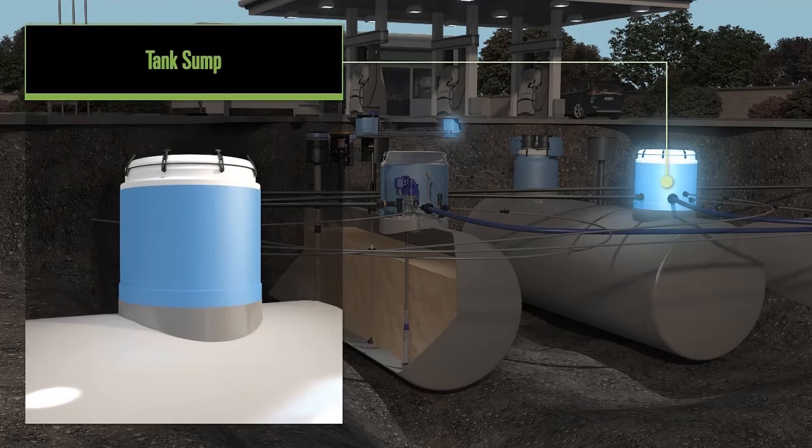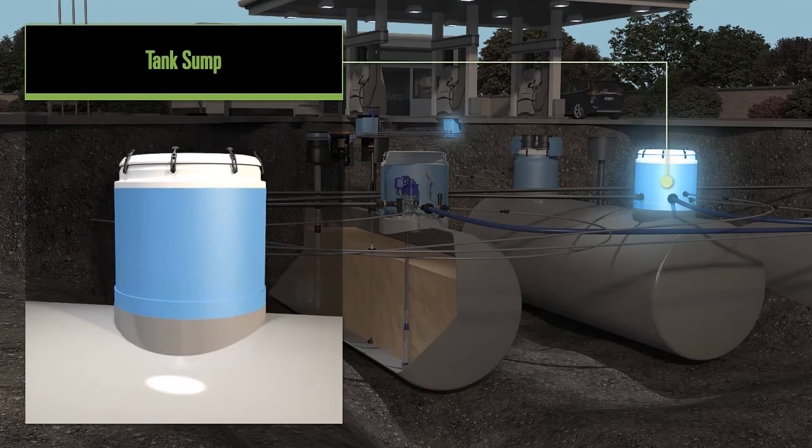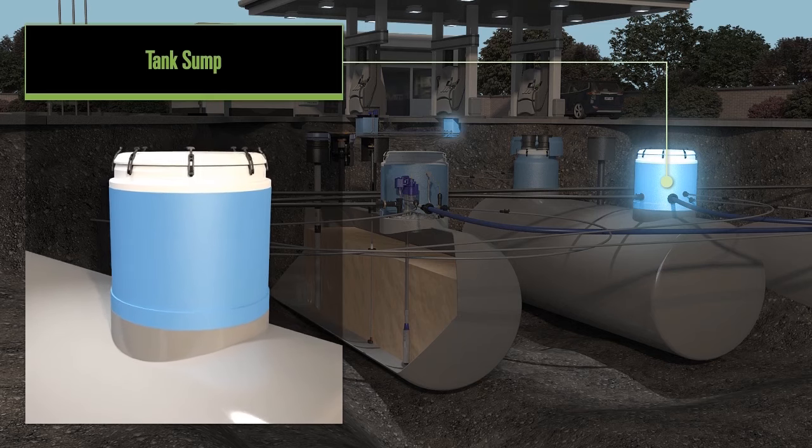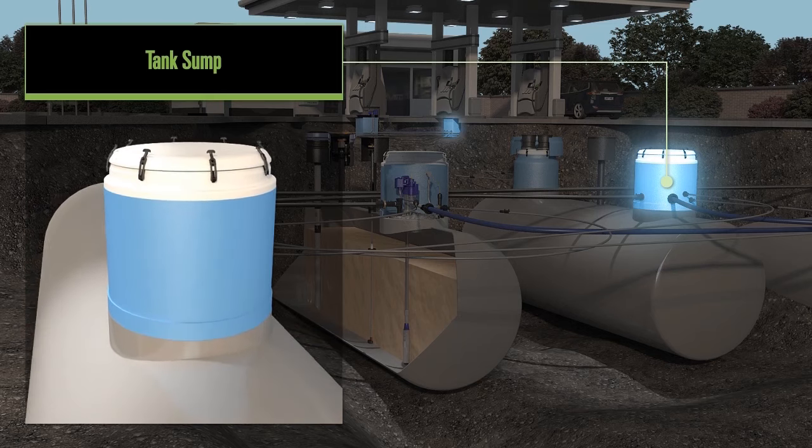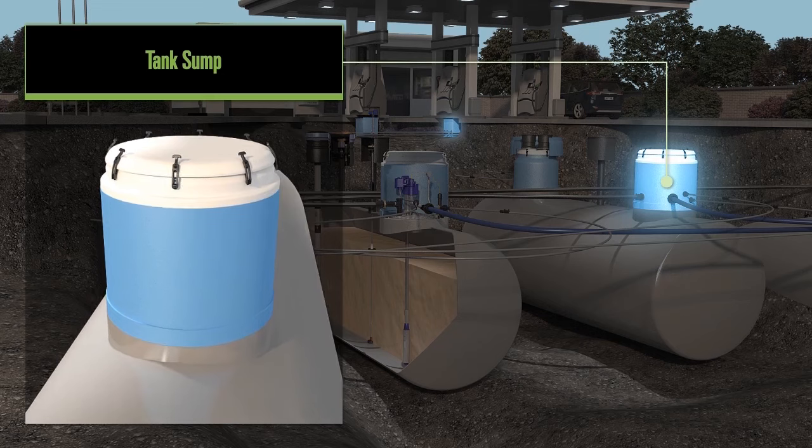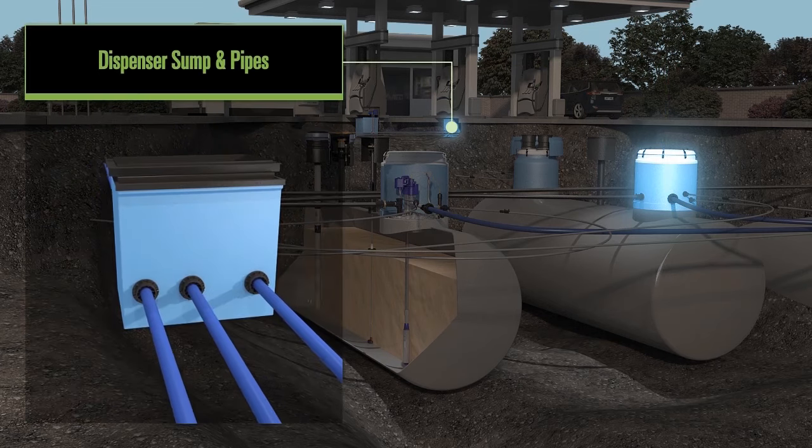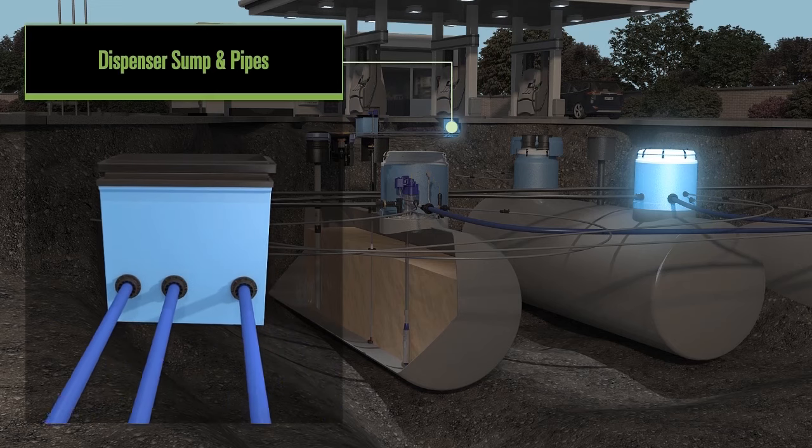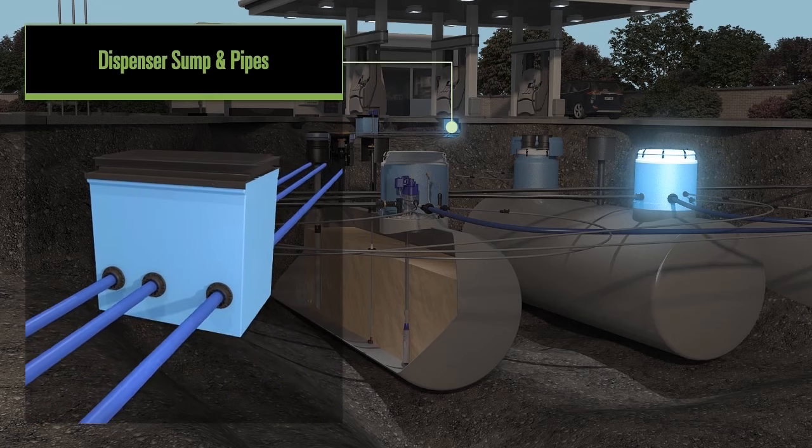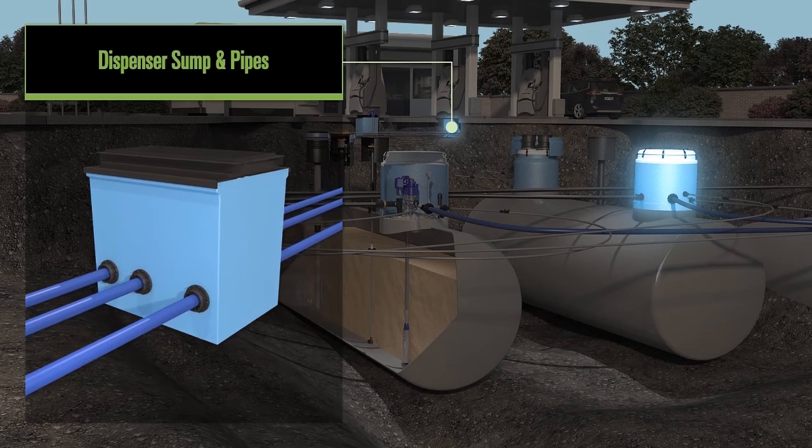What is a sump? A sump is a containment in which water or other liquid is collected. In our system, a sump sits on top of a tank or under a dispenser to act as a barrier to the outside environment and house the connection points of the pipe to the pump so we can safely transport fuel from the tank sump to the dispenser.